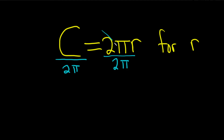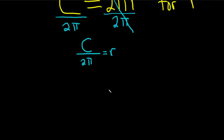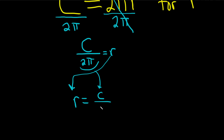And now they're the same, so they cancel. So we have c over 2π, and that's equal to r. You could leave it like this, but it's always better to put what you're solving for on the left. So I'm going to take the r and put it here, and take this thing and put it here — so r equals c over 2π.